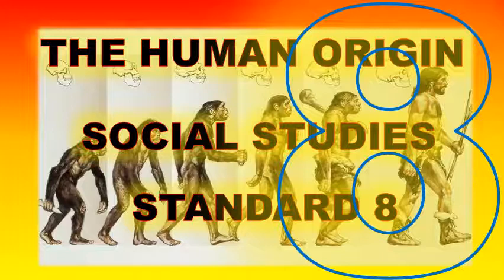The second stage is the Middle Stone Age. During this period, human beings lived in a wooded environment. The Middle Stone Age was marked by great changes in lifestyle, including improved weapons, improved tools made from wood and stones, better shelter, the invention of fire, and the development of simple language for communication. The Homo erectus falls under the Middle Stone Age period.